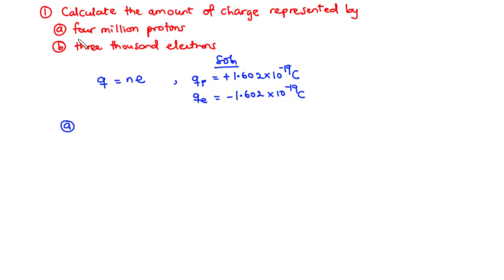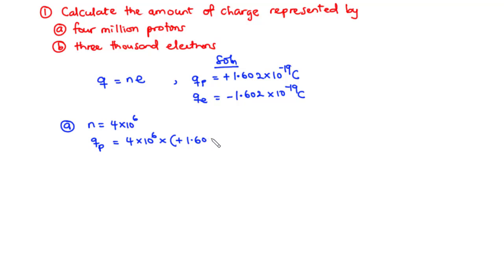For part A, to find the amount of charge represented by 4 million protons, we have N equal to 4 million, that is 4 × 10⁶. So therefore, Q_P equals N times the charge per proton: 4 × 10⁶ times +1.602 × 10⁻¹⁹. Multiplying these two values, we obtain 6.408 × 10⁻¹³ coulombs. This is the amount of charge represented by 4 million protons.